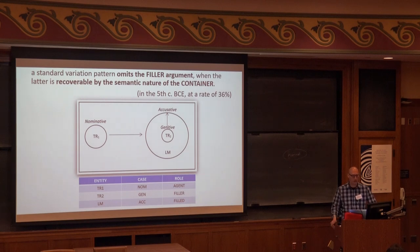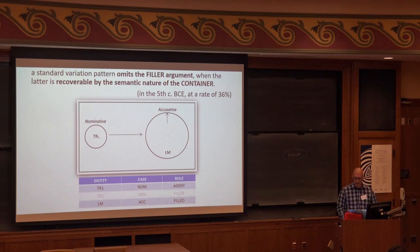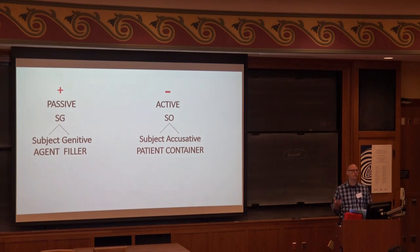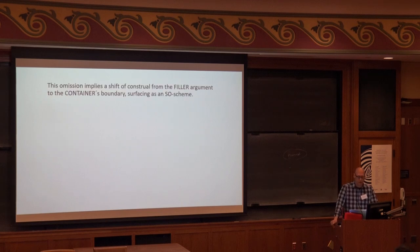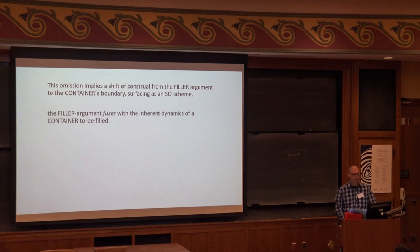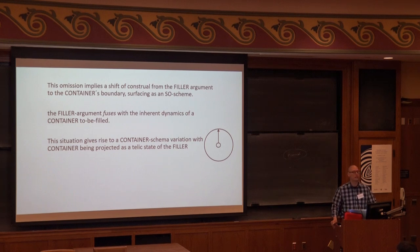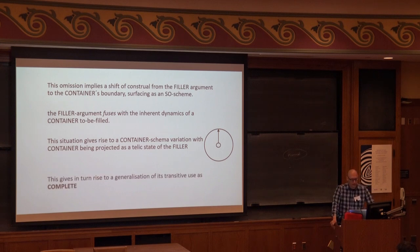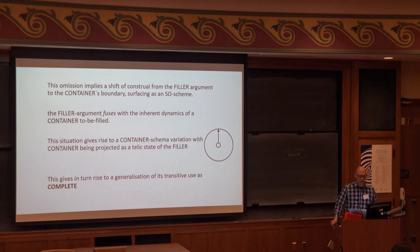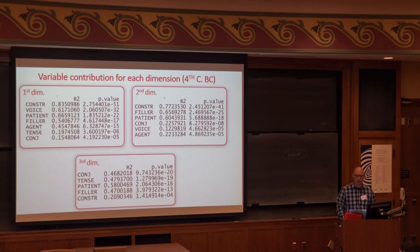So a standard variation pattern that arises, first of all, omits the filler argument when the latter is recoverable by the semantic nature of the container itself. So somehow we have a kind of demotion of the filler argument. So the two prototypical constructions that first arise are the SG and the SO. This omission implies a shift of the construction's focus from the filler argument to the container's boundary, surfacing as the SO scheme. The filler argument somehow fuses with the inherent dynamics of the container to be filled. This situation gives rise to a container schema variation, with containing being projected as a telic state of the filler. And this, in turn, gives the generalization of its transitive use as complete, that incrementally becomes present in the corpus.